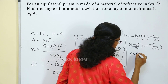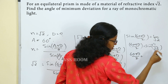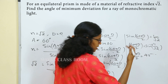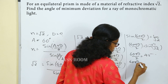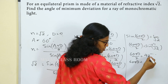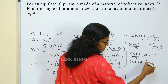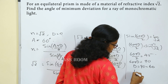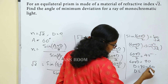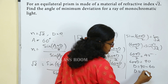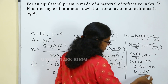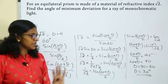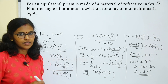So 60 plus D divided by 2 is equal to 45. Cross multiplying: 60 plus D equals 90. Therefore D is equal to 90 minus 60, so capital D equals 30. The angle of minimum deviation is 30 degrees.